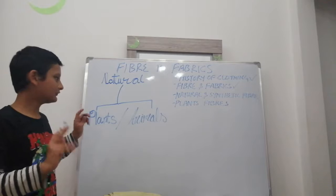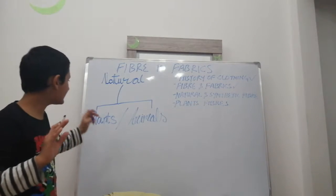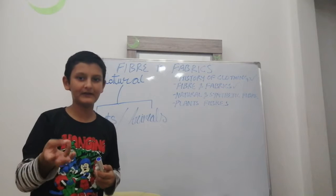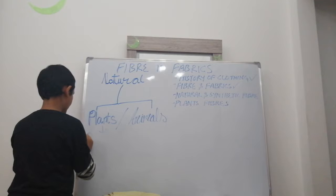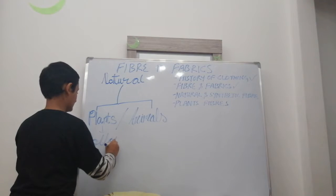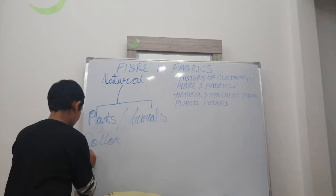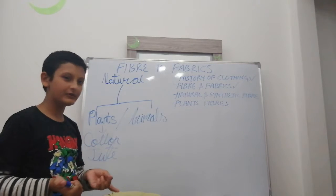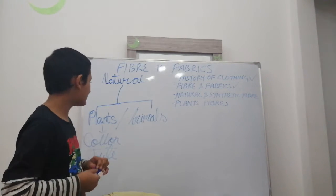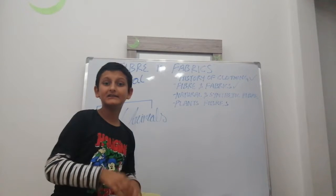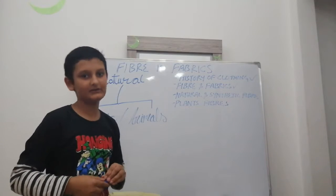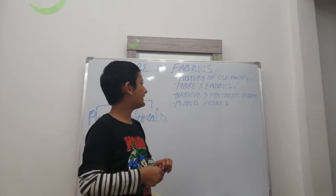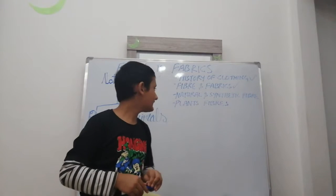Natural fiber can be of two types: from plants or from animals. From plants, we get cotton — from the cotton plant — and jute — from the jute plant. From animals, silkworms give us silk. So natural plant fibers: cotton and jute; natural animal fibers: silk.